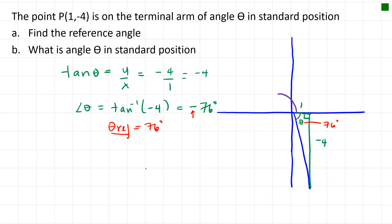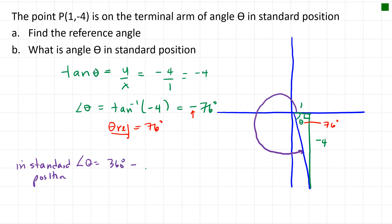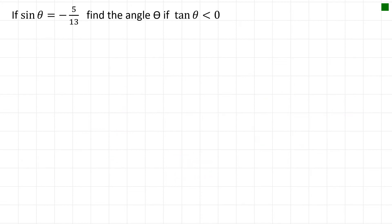The angle in standard position goes from the x-axis all the way around, so in standard position it's 360 degrees minus 76 degrees, which equals 284 degrees to the nearest degree.